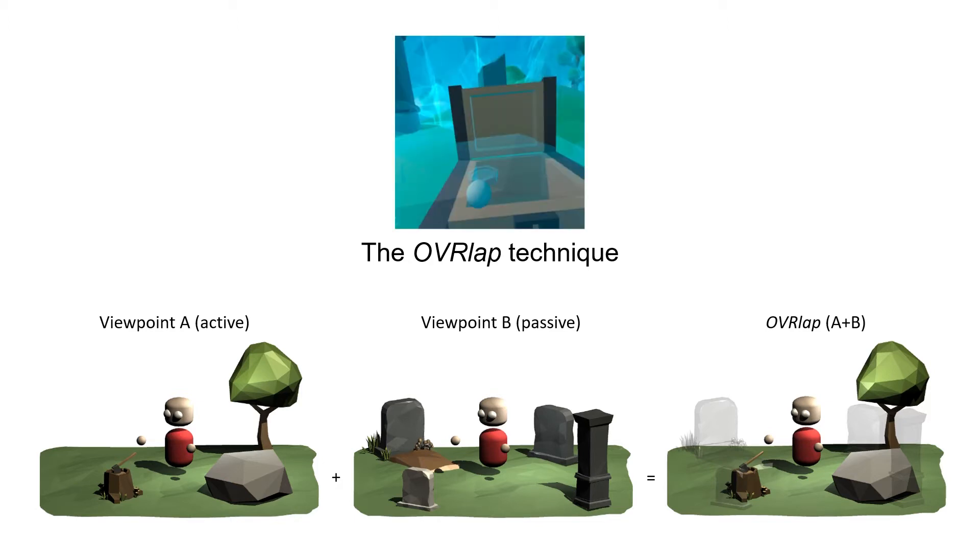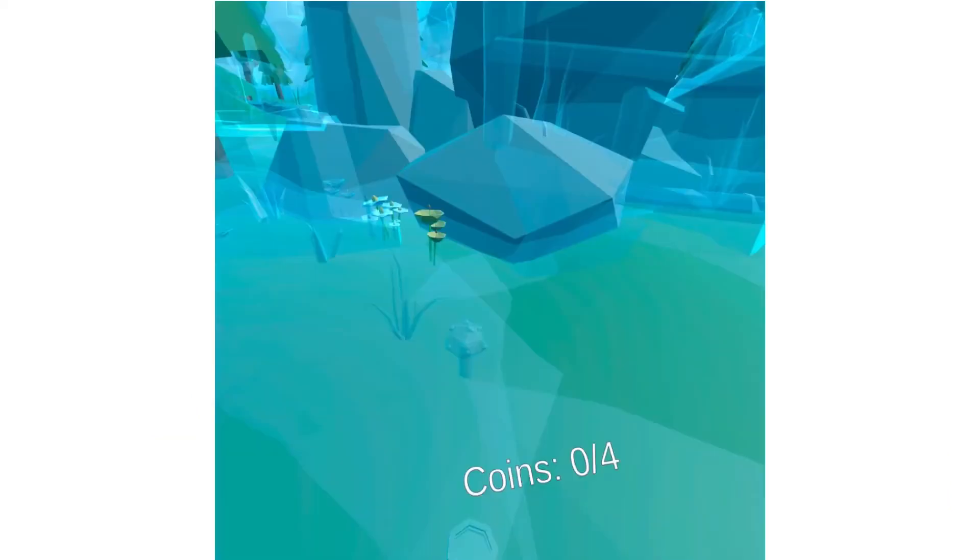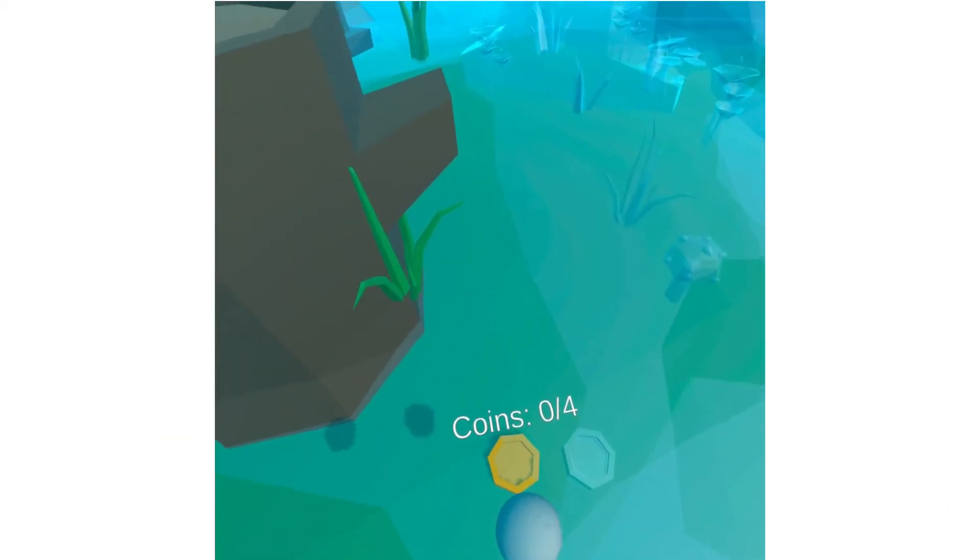To preserve the ability to meaningfully interact, OVRlap features the idea of one active and several passive viewpoints. The user can only interact in the active viewpoint. Objects in the active viewpoints are seen as opaque, whereas objects in passive viewpoints are seen as translucent. The active viewpoint can be switched, for example, with controller input.